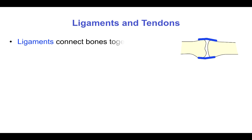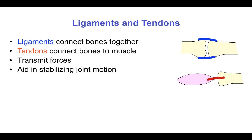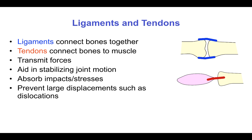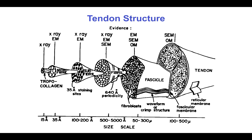Ligaments connect bones to bones, whereas tendons connect bones to muscle. They transmit forces and aid in stabilizing joint motion, absorb impact and stresses, and prevent large dislocations and displacement. They're primarily uniaxial, one-dimensional loading elements and have a highly hierarchical structure. The tropocollagen molecule forms microfibrils and fibrils, which are organized into bundles known as fascicles that also have fibroblasts embedded. Inside the fascicle, fibers usually have a wavy or crimped organization. Several fascicles bundle together to form the tendon, wrapped in a sheath of collagen.